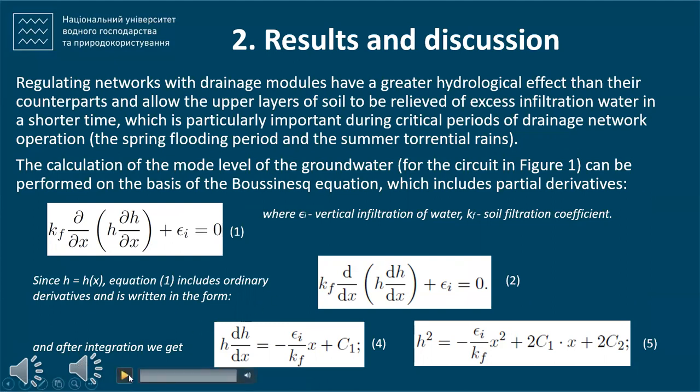The calculation of the groundwater level mode for the scheme shown in Figure 1 can be performed on the basis of the Boussinesq equation, which includes partial derivatives.